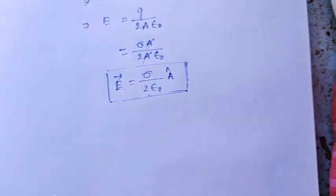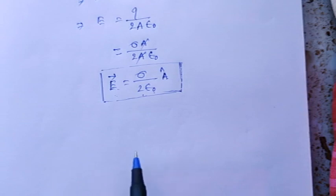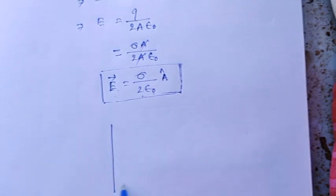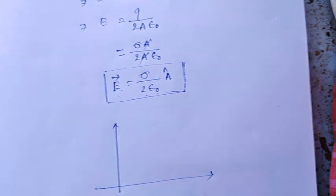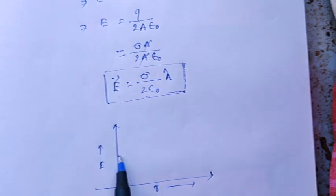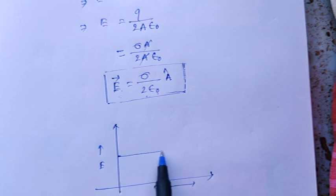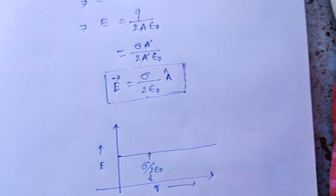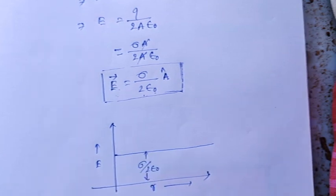Now if anyone wants to know about the graphical representation of electric field with distance for this plane sheet, then the graph will be like this: along the horizontal axis is r (distance), and the vertical axis is electric field. Its value will be uniform at sigma by 2 epsilon naught. I hope it's clear to you.